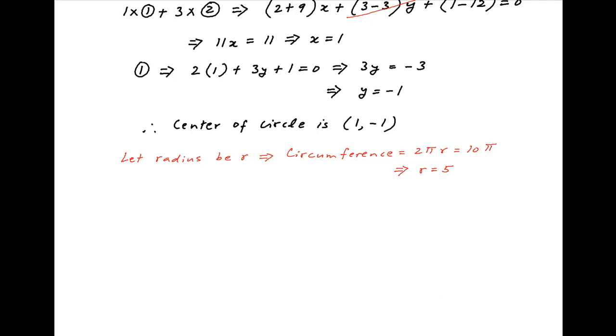Therefore we have the center of the circle and its radius and so the equation of the circle is (x - 1)² plus (y + 1)² equals 5² which means that x² plus y² minus 2x plus 2y plus 2 equals 25.